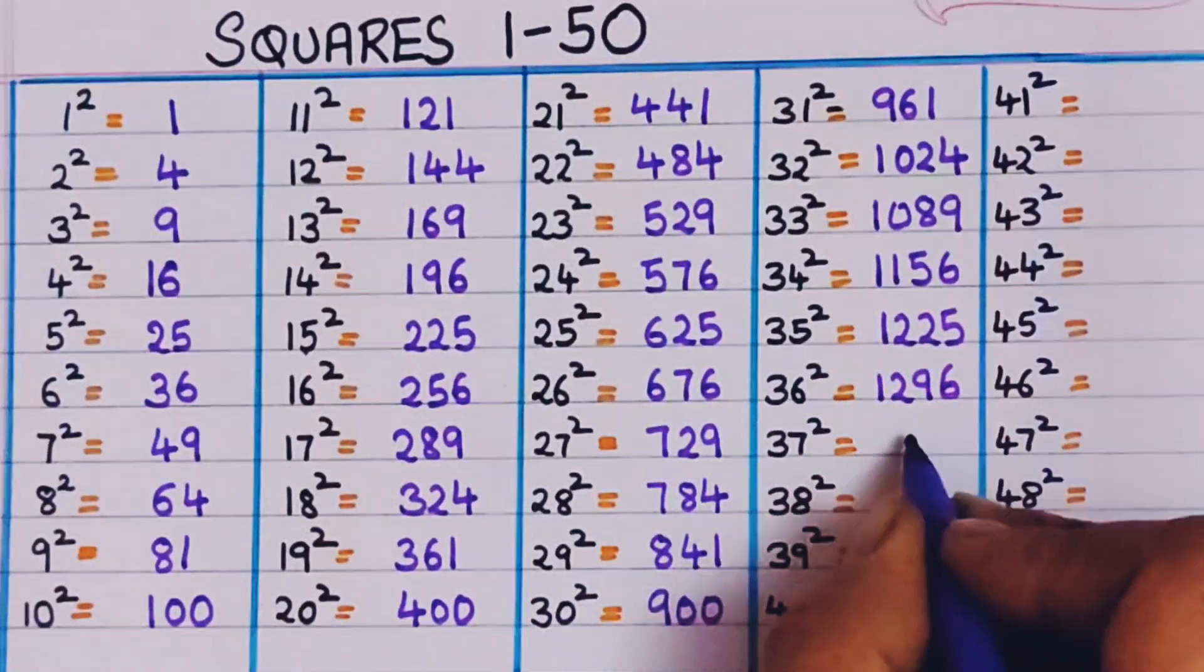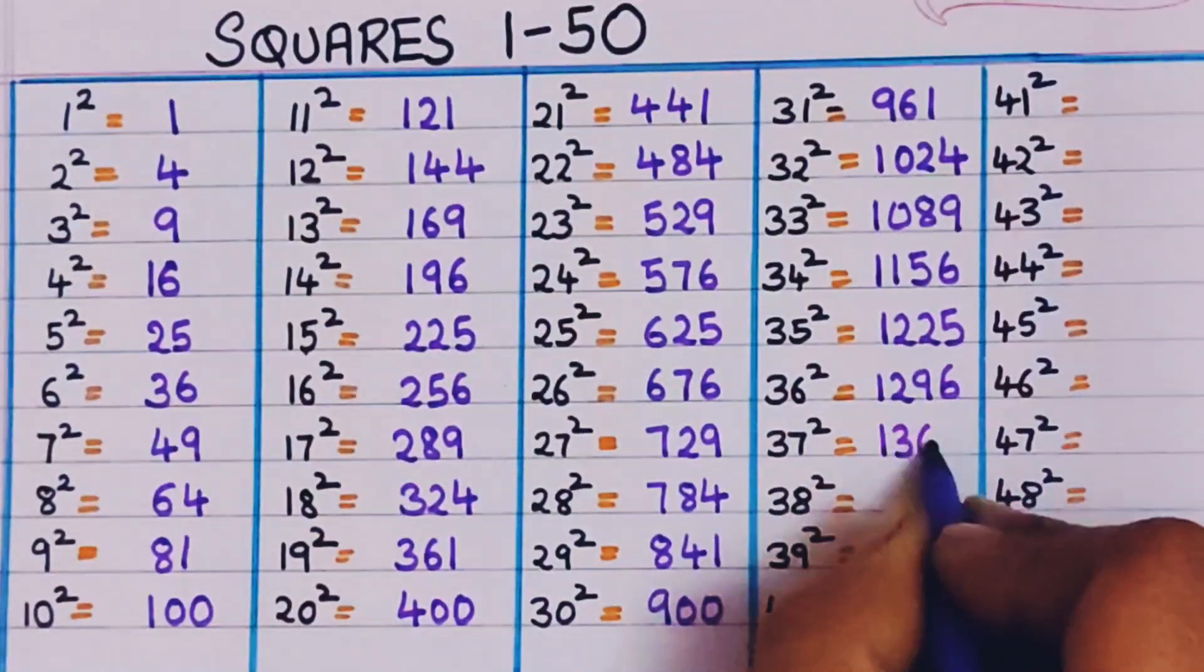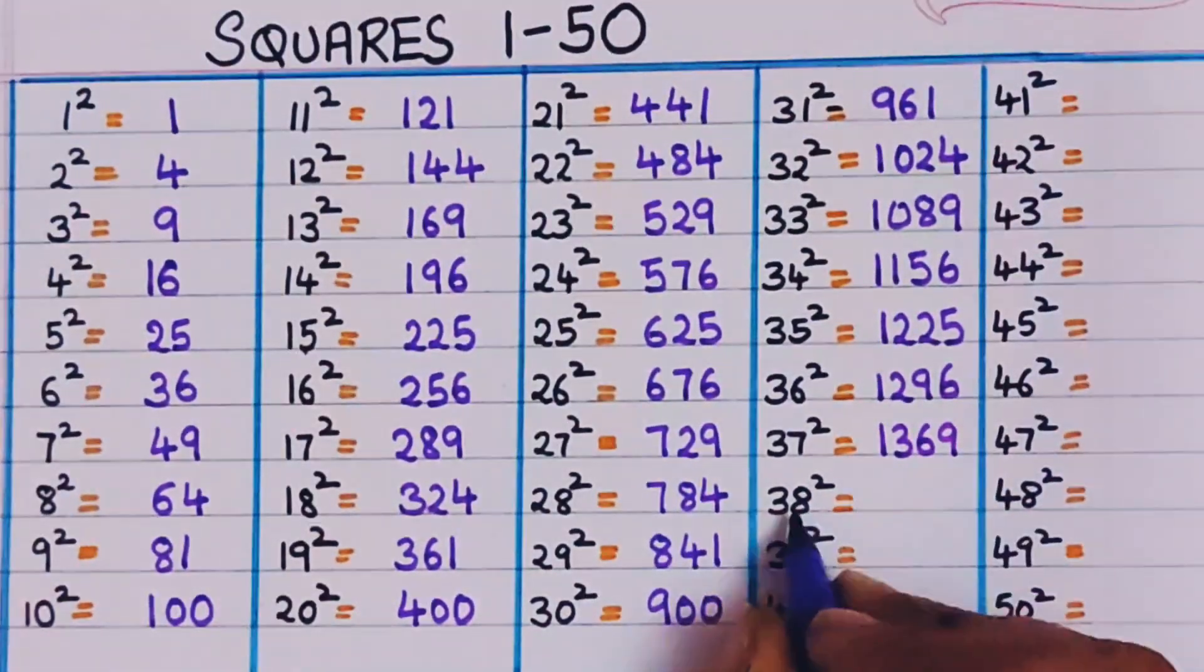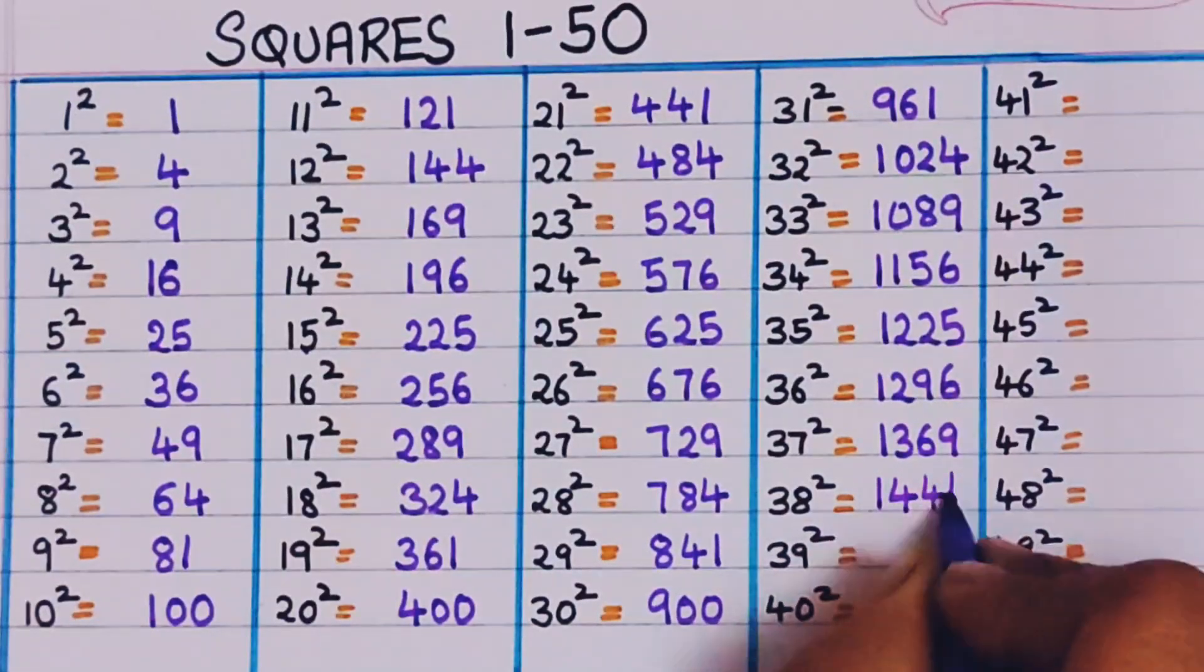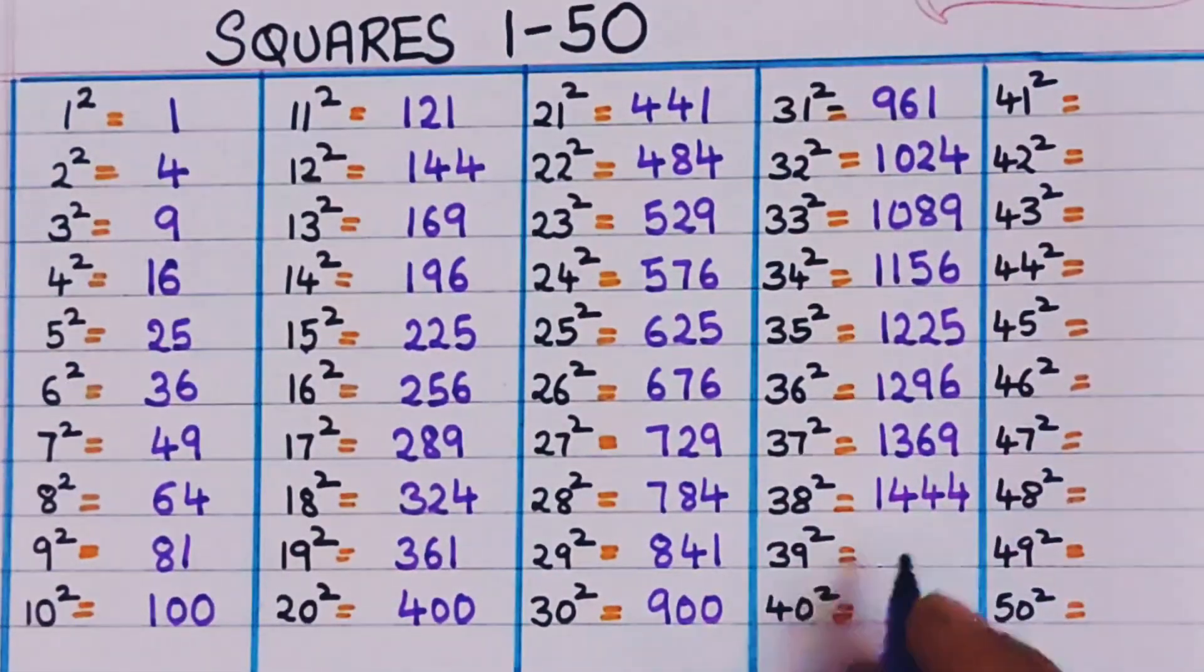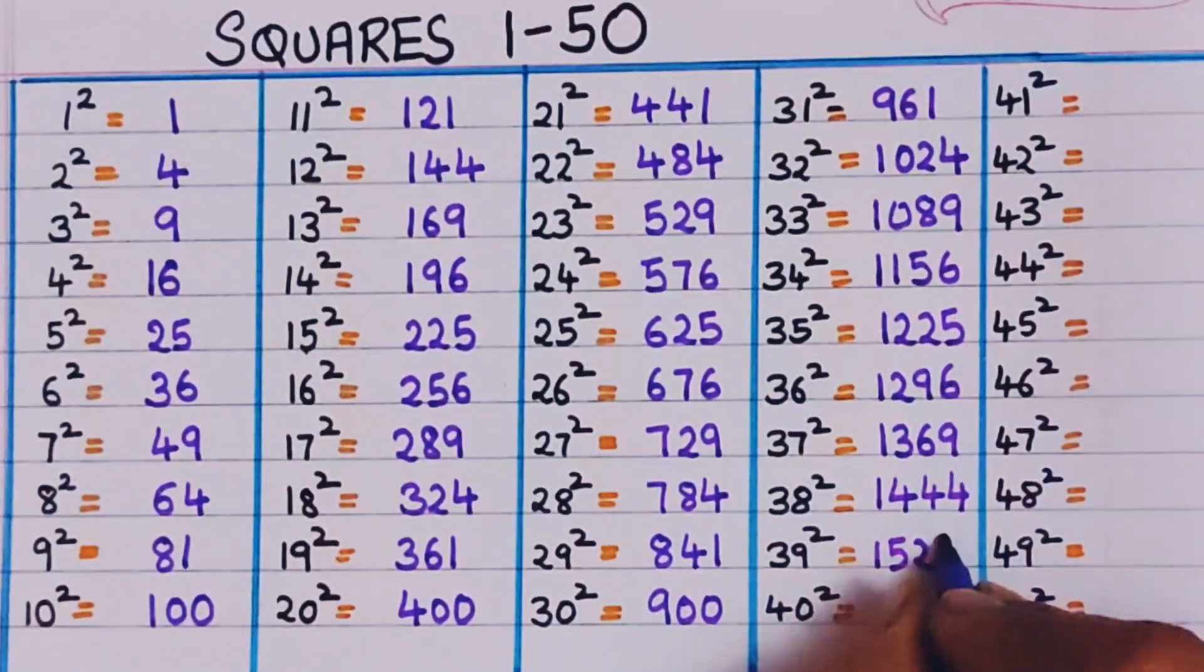37 square, 1369. 38 square, 1444. 39 square, 1521.